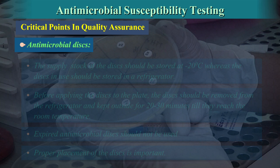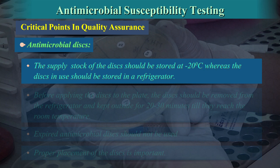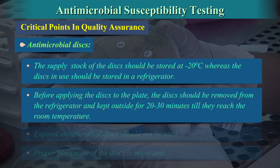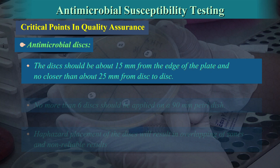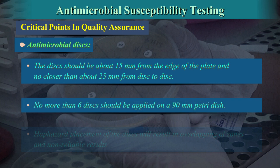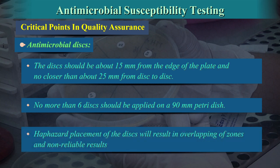Antimicrobial discs: The supply stock of discs should be stored at minus 20 degrees centigrade, whereas the discs in use should be stored in a refrigerator. Before applying the discs to the plate, they should be removed from the refrigerator and kept outside for 20 to 30 minutes until they reach room temperature. Expired antimicrobial discs should not be used. The discs should be placed about 15 mm from the edge of the plate and no closer than about 25 mm from disc to disc. No more than 6 discs should be applied on a 90 mm Petri dish. Haphazard placement will result in overlapping zones and non-reliable results.